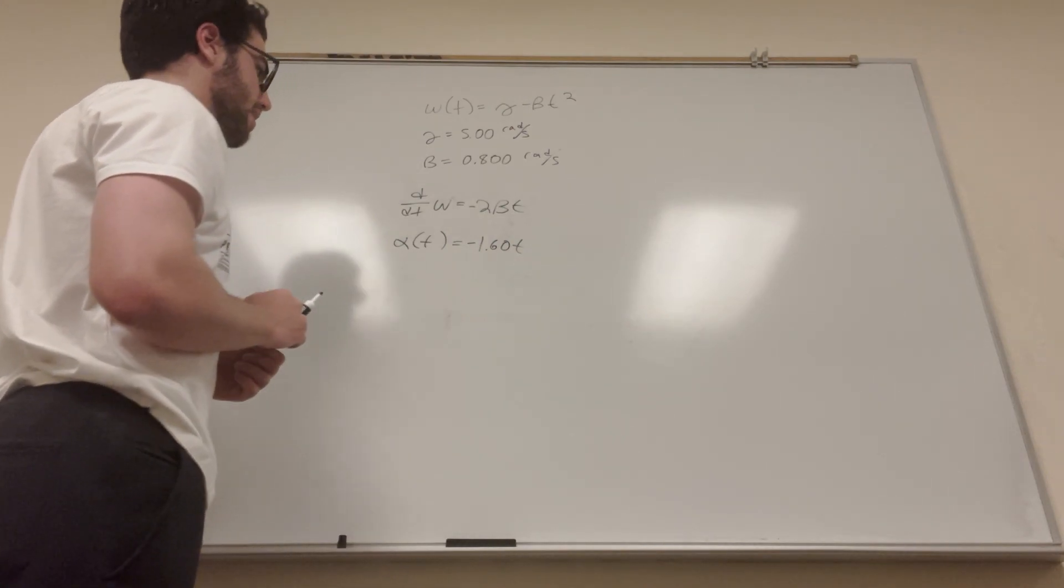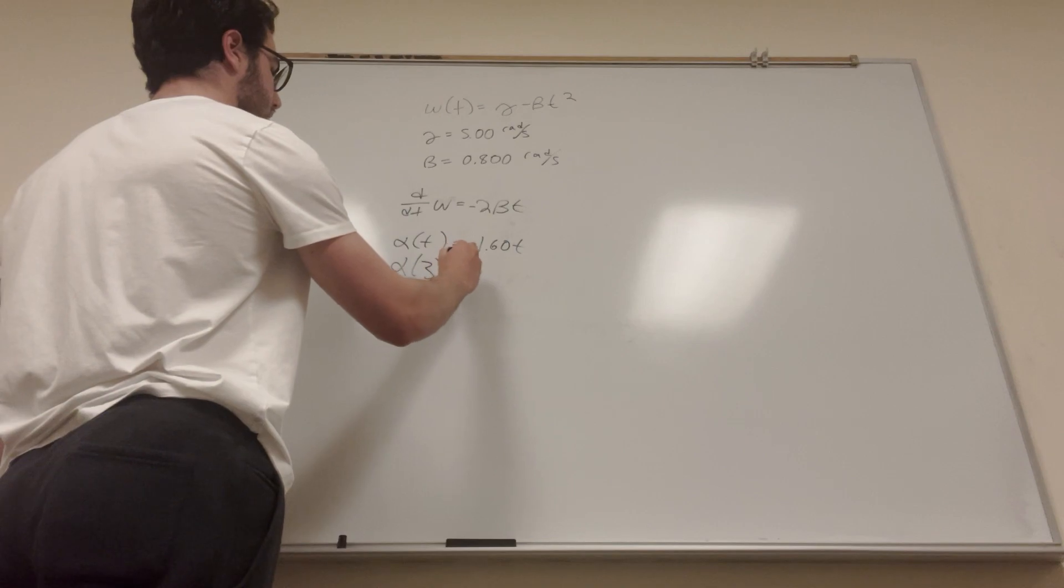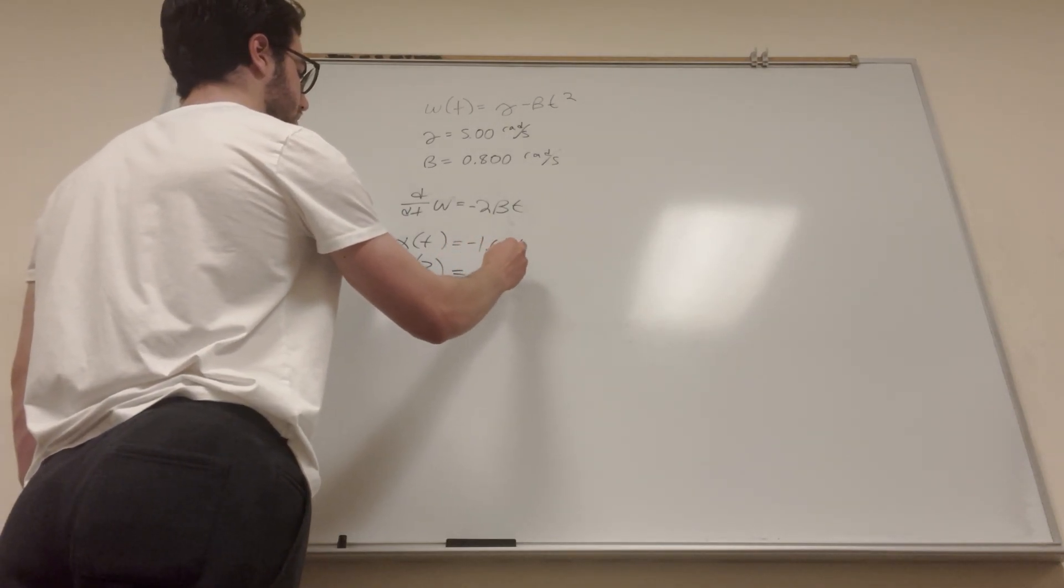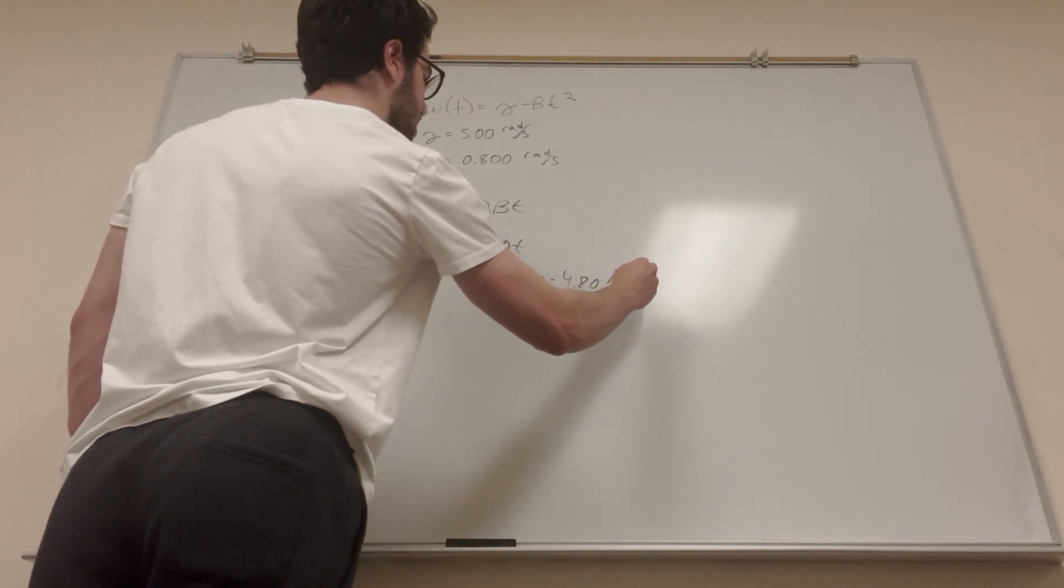Part B wants you to find it at time equal to 3. So what you're just going to do is plug in 3 for t. That's equal to negative 1.60 times 3, and that's equal to negative 4.80 radians per second squared.